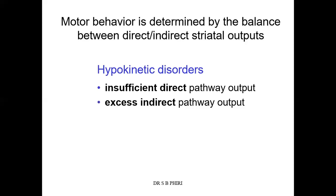Starting with hypokinetic disorders — from the name itself, hypokinetic means there is reduction in movements. In this case, when you have insufficient direct pathway output, movement is reduced. And if you have excess indirect pathway output, you're going to have a hypokinetic disorder, because there will be a reduction in movements, which is hypokinesia. The other word for hypokinesia is also called bradykinesia.